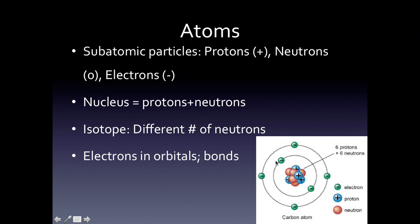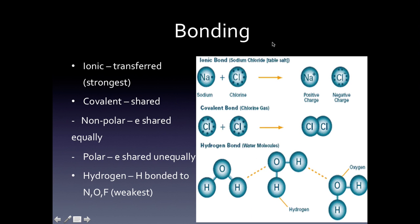Electrons and their orbitals are what form bonds. There are three main types of bonds you should know for the AP Bio exam: ionic, covalent, and hydrogen bonds. Ionic bonds are the strongest type and occur when electrons are transferred. For example, sodium and chlorine: the electron on sodium gets transferred to the chlorine, giving sodium a positive charge and chlorine a negative charge.